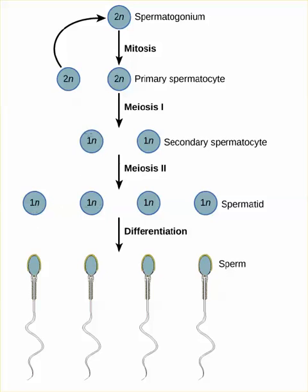Remember, this cell is haploid in regards to chromosome number, but each chromosome is duplicated. So when you separate, each of these cells will get one sister chromatid from each of the chromosomes in the haploid cell. That's why these daughter cells are 1N.